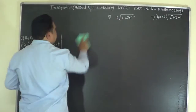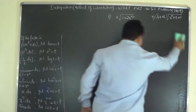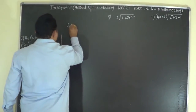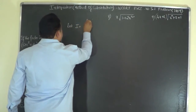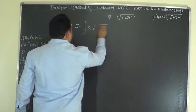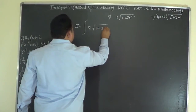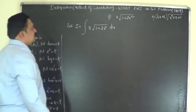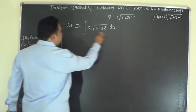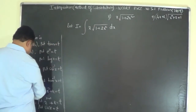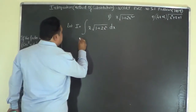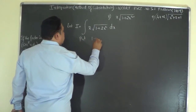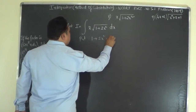Problem number 8: let I equal the integral of x times the square root of (1+2x²) dx. Since x dx appears as a factor, we use the substitution: put 1+2x² equal to t.